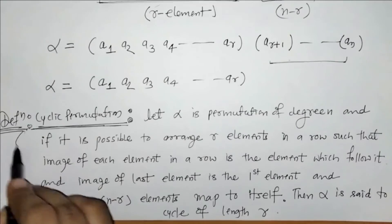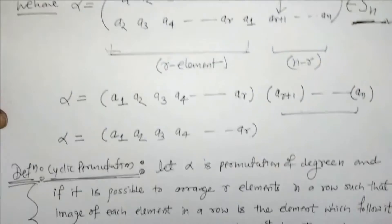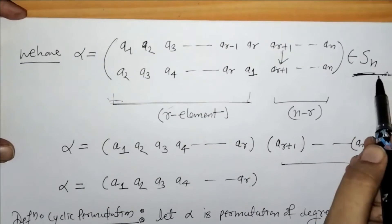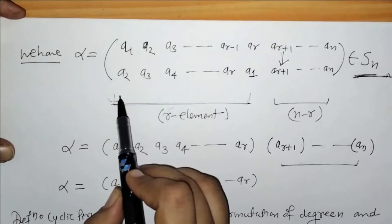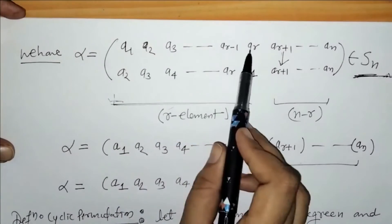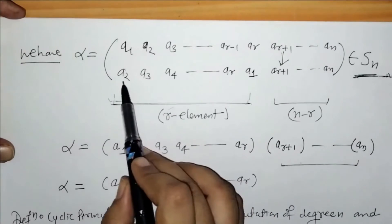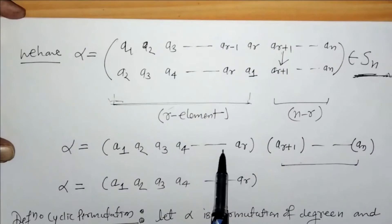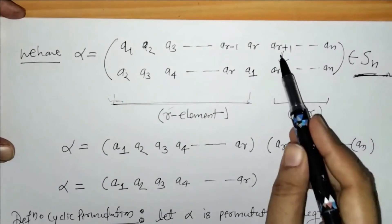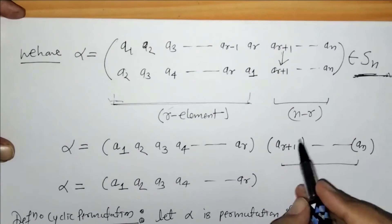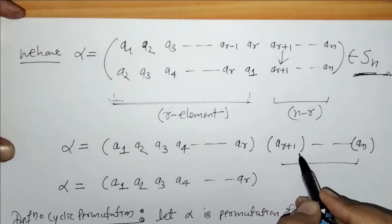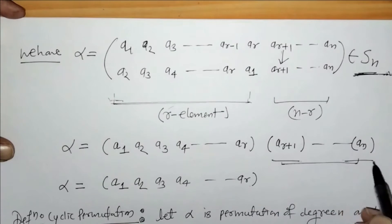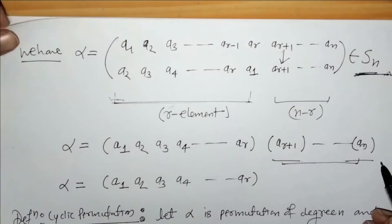Here we have defined cyclic permutation. For this we considered a permutation of the set Sn. The images of the first R elements follow each other in a cycle of length R, and the remaining n minus R elements map to themselves — those are cycles having length 1. So here we have to note down these points.